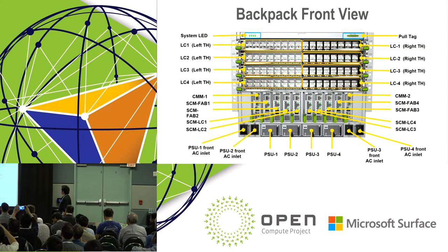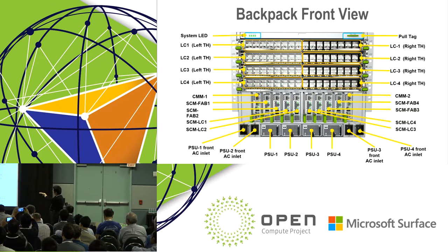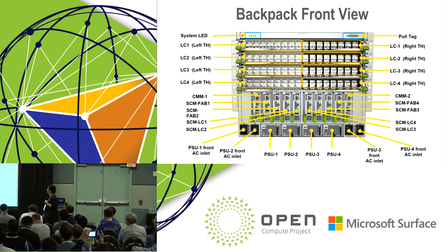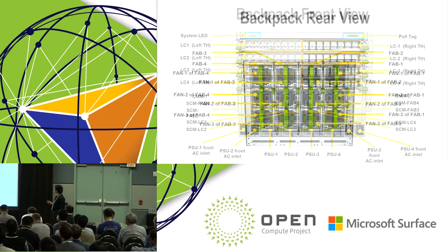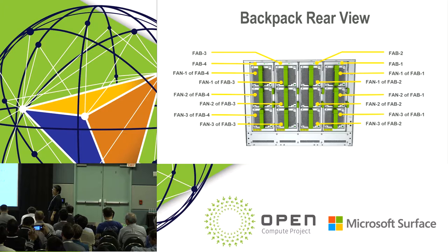Chassis front view: the top half has four line cards. Each line card has two switch elements — you can see the left and right with slightly different colors, like yin and yang. In the middle section are all the CMM and SCM modules. The very left and very right slots are CMM — chassis management modules. The middle slots are SCM. The bottom holds four PSUs, each supporting three kilowatts. For the chassis rear view: four fabric cards plug in vertically, and each fabric card has three fan trays — totaling 12 fan trays — which is why we can provide much better thermal performance.